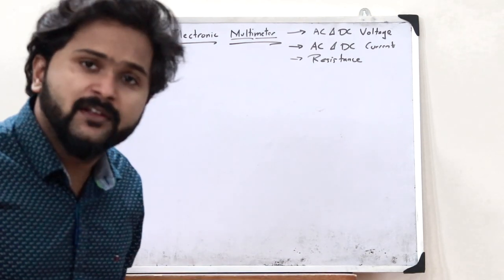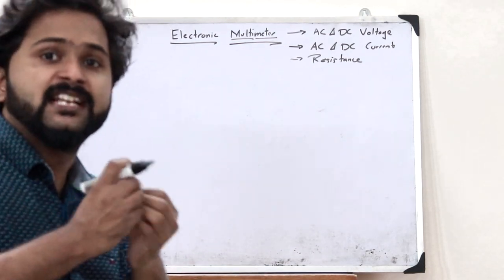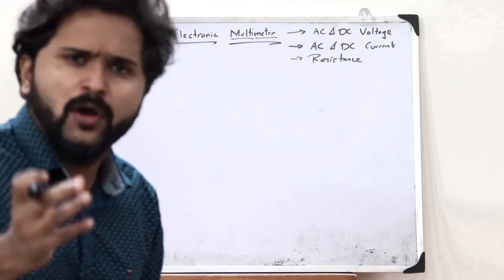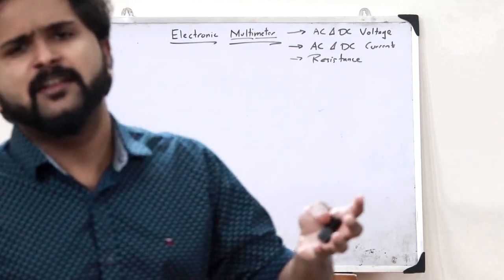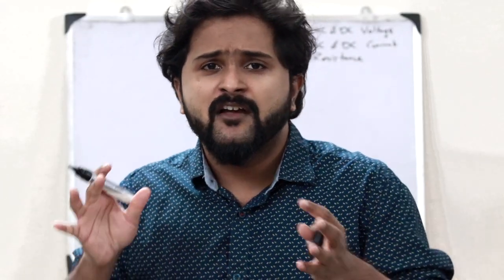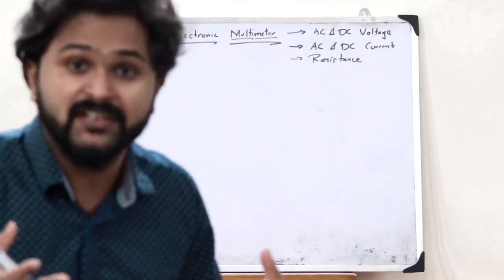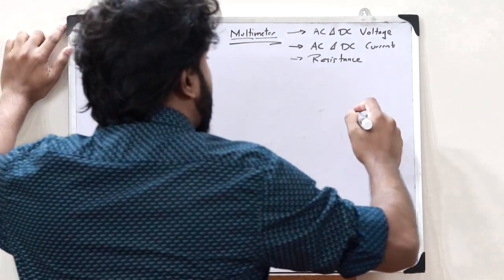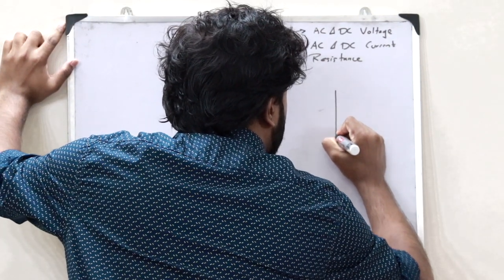There are two types of multimeters: a digital multimeter and an analog multimeter. A digital multimeter is the type of multimeter which provides a digital output — it actually displays a digital number with the help of a digital screen. That is what we refer to as a digital multimeter.